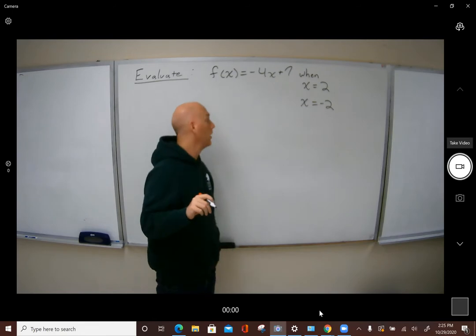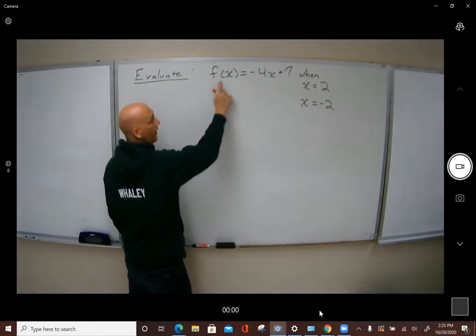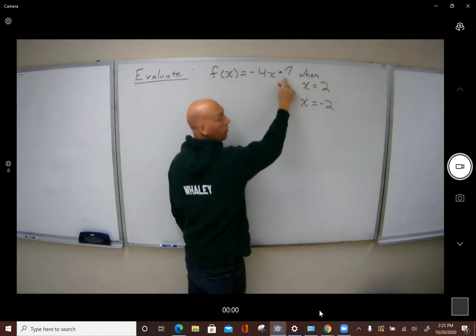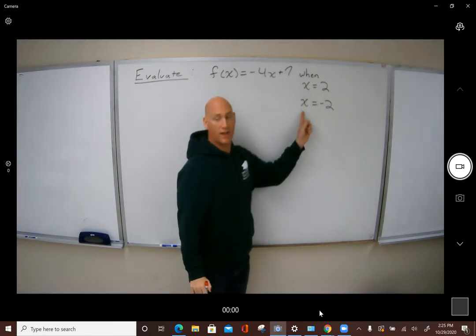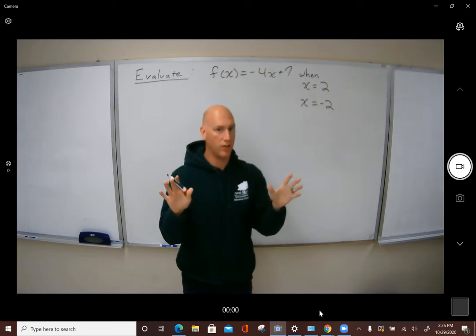Okay guys, so this is example one. We're going to be evaluating f of x equals negative 4x plus 7, and we're evaluating for when x is 2 and x is negative 2. You've seen this already, you've done this already.